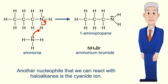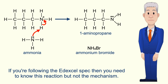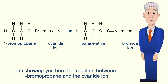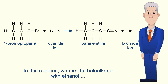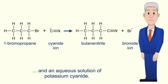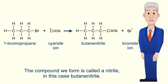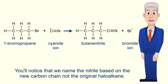Another nucleophile that we can react with haloalkanes is the cyanide ion. If you're following the Edexcel spec then you need to know this reaction but not the mechanism, whereas AQA students also need to know the mechanism. I'm showing you here the reaction between 1-bromopropane and the cyanide ion. In this reaction we mix the haloalkane with ethanol and an aqueous solution of potassium cyanide, then heat this under reflux. The compound we form is called a nitrile — in this case butanenitrile. You'll notice that we name the nitrile based on the new carbon chain, not the original haloalkane.